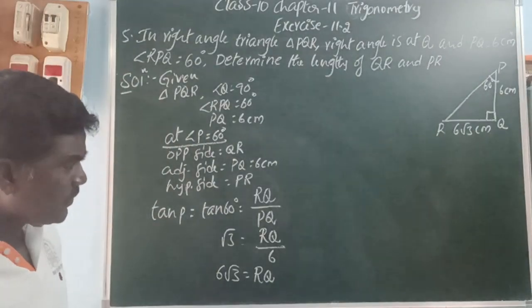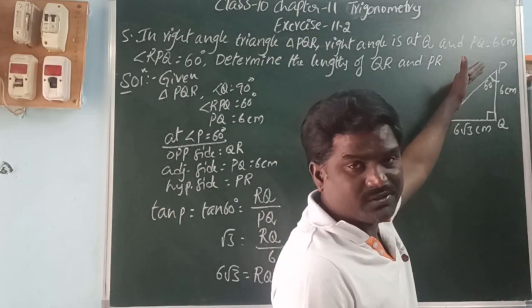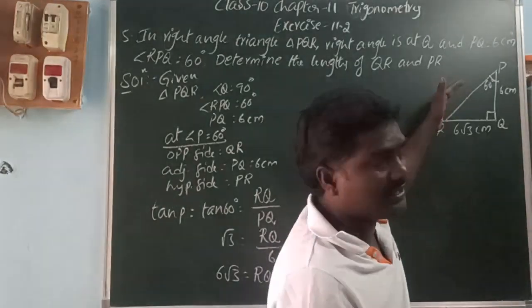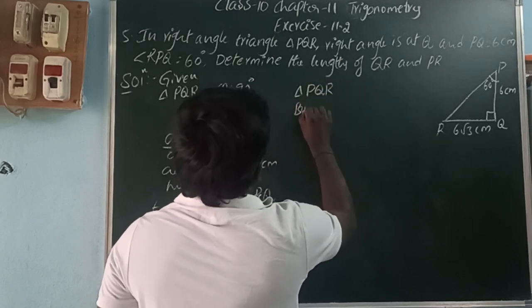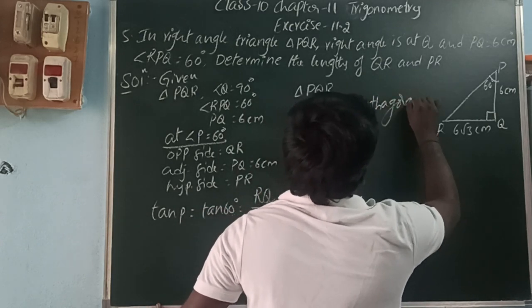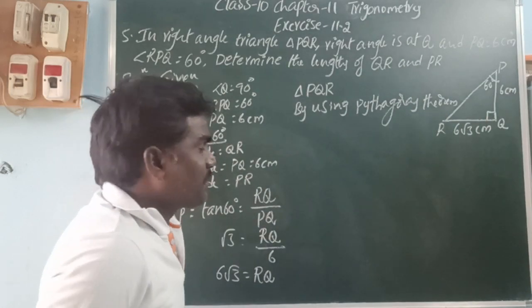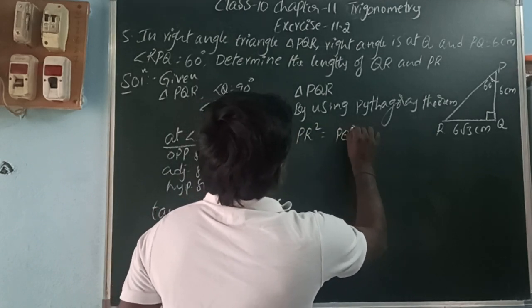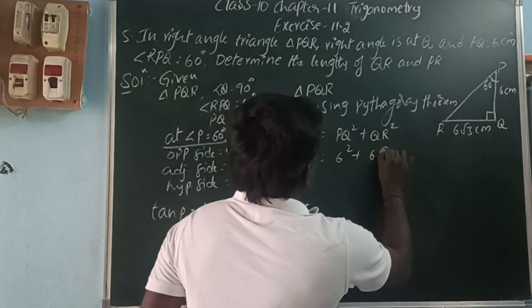Now find PR. We can find PR by using the Pythagorean theorem in triangle PQR. By the Pythagorean theorem, hypotenuse squared equals side squared plus side squared. So PR squared equals PQ squared plus QR squared. PQ is 6, so 6 squared. QR is 6 root 3, so 6 root 3 whole squared.